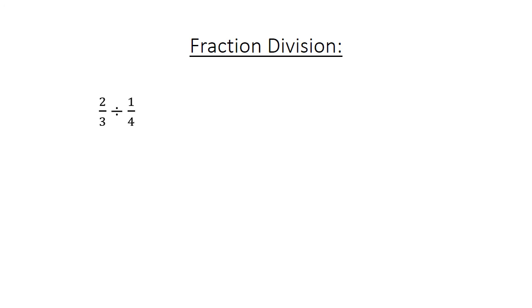Fraction division. 2 over 3 divided by 1 over 4 equals 2 over 3 times 4 over 1 equals 8 over 3 equals 2 and 2 over 3.